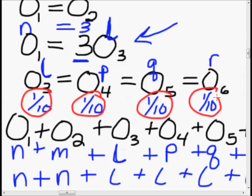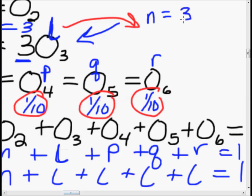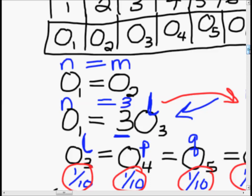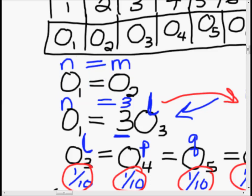Now since L equals 1/10 and N equals 3L, we get N equals 3 times 1/10, which is 3/10. And since N was O1 and M was O2, and N equals M, both outcome 1 and outcome 2 have probability 3/10.